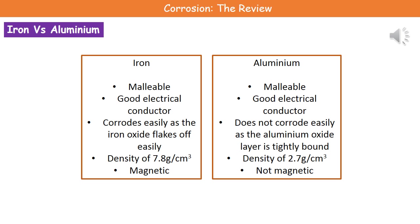Iron is magnetic, but aluminium is not magnetic. That's the final property we really need to think about. Look at the table they give you, think about which of those properties are relevant, and only talk about those in your answer.